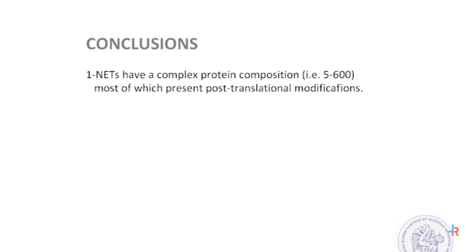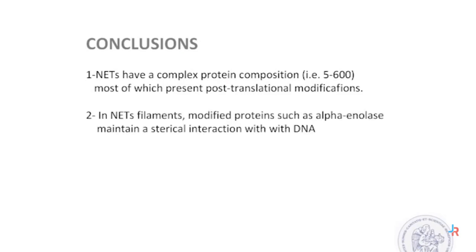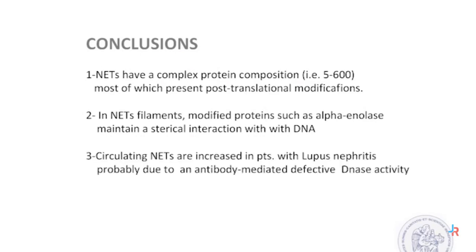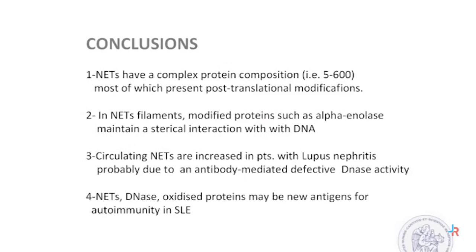In conclusion: NETs have a complex protein composition of about 500 to 600 proteins, most of which present post-translational modifications. In NET filaments, modified proteins such as alpha-enolase maintain a steric interaction with DNA. Circulating NETs are increased in patients with lupus nephritis, probably due to antibody-mediated defective DNase activity. Finally, NETs — DNAs and oxidized proteins — may represent new antigens for autoimmunity in lupus. Thank you.